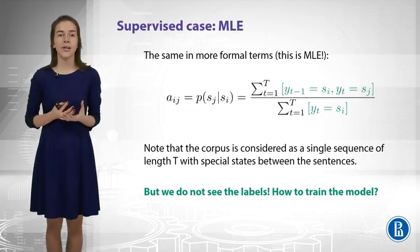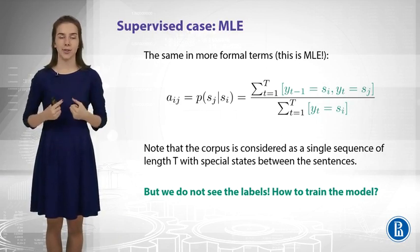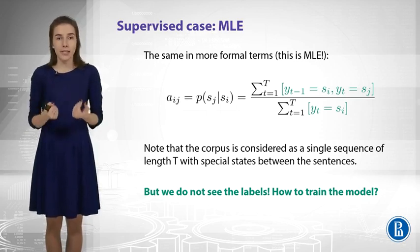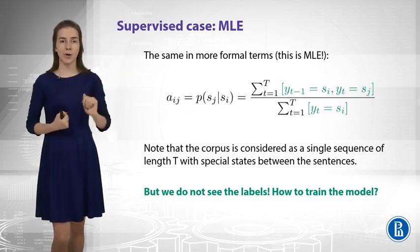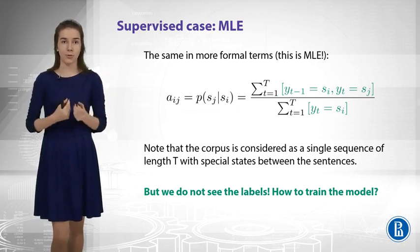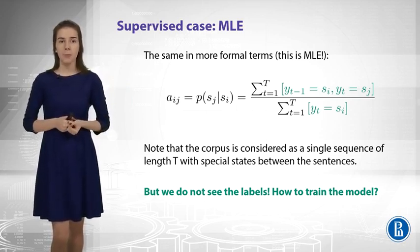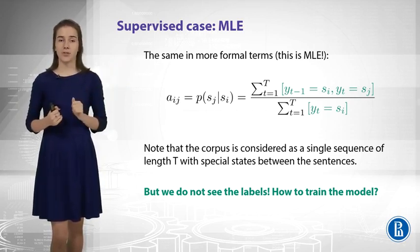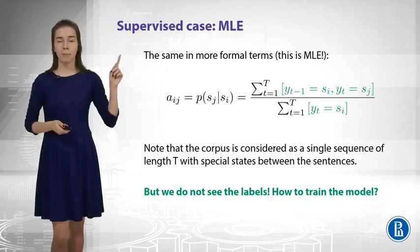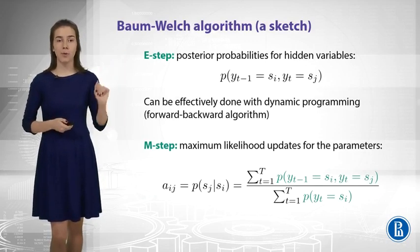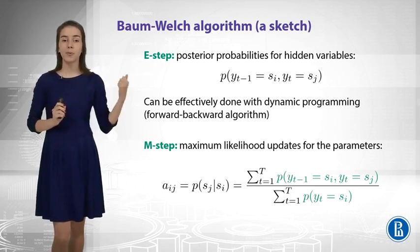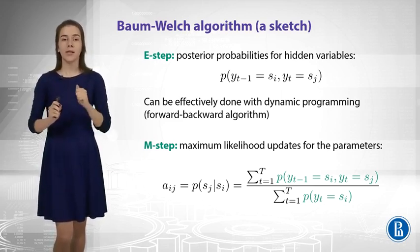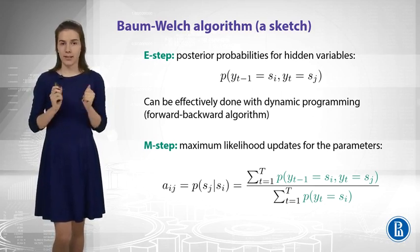In real life, you usually do not have tags in your training data — you only see plain text. You cannot estimate those indicator functions because you do not see the tags at each position. But you could approximate those indicators by probabilities — values between 0 and 1. If we have a trained hidden Markov model, we could apply it to our text to produce those probabilities.